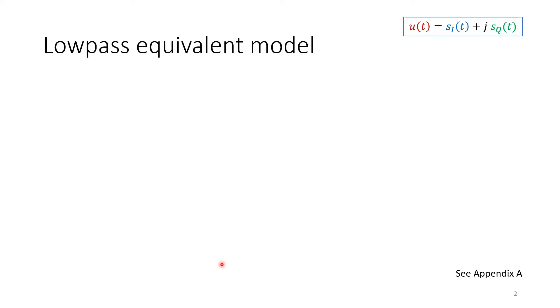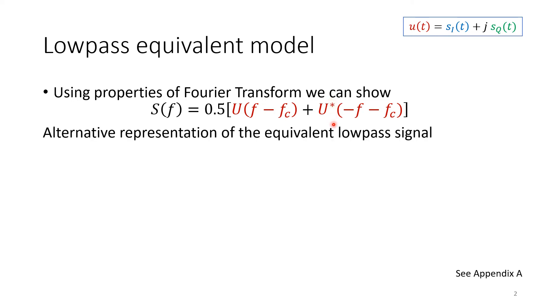Lowpass equivalent model. Using properties of Fourier transform, we can show that the spectrum S(f) is in fact one-half times two versions shifted, and we have a complex conjugate here because of the multiplication by minus sign. This is an alternative representation of the equivalent lowpass signal.